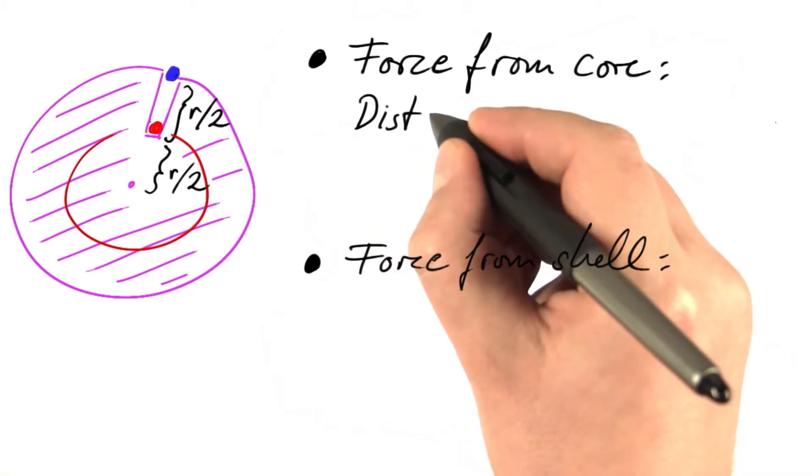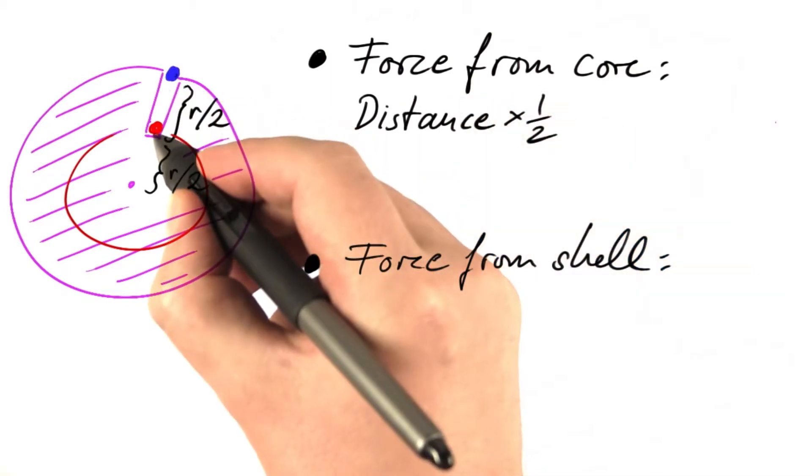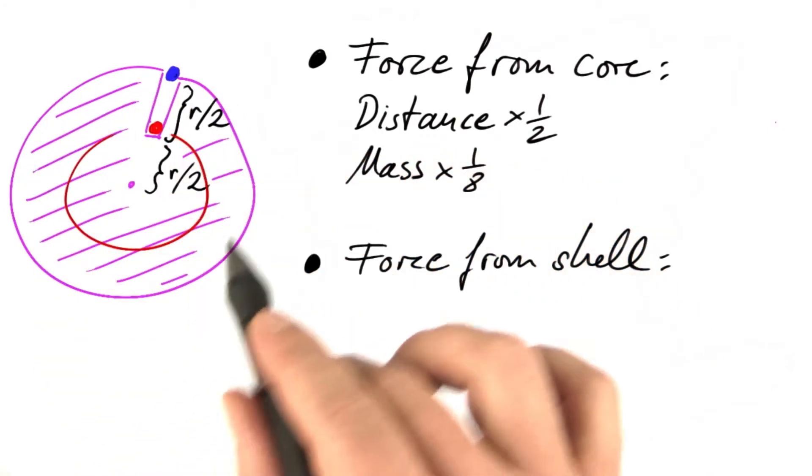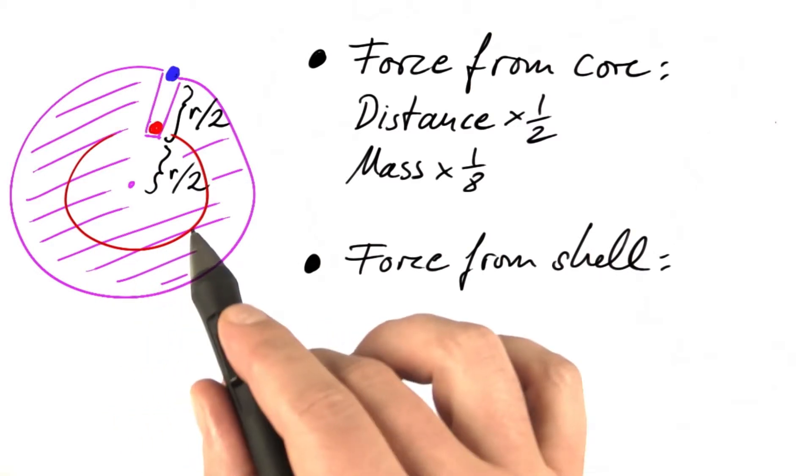Distance is multiplied by one-half as we go down that hole. The mass is multiplied by one over eight as we're shrinking the original sphere to half of its radius.